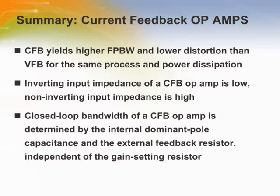We have learned several key features of CFB op-amps. The most important is that for a given complementary bipolar IC process, CFB generally always yields higher full-power bandwidth than VFB for the same amount of quiescent supply current, because there is practically no slew rate limiting in CFB. Because of this, the full power bandwidth and the small signal bandwidth are approximately the same. The second important feature is that the inverting input impedance of a CFB op-amp is very low, which is advantageous when using the op-amp in the inverting mode as an IV converter. The third feature is that the closed-loop bandwidth is determined by the internal Cp capacitor and the external feedback resistor R2, and is relatively independent of the gain setting resistor R1. We will now examine some typical application issues and make further comparisons between CFBs and VFBs.